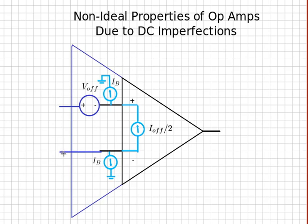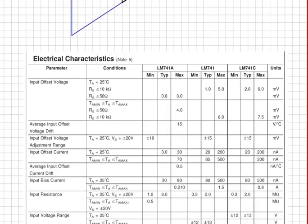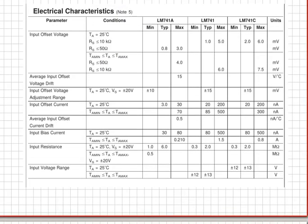These parameters are given in op-amp data sheets. Let's look at a typical op-amp data sheet to see how we might find them.